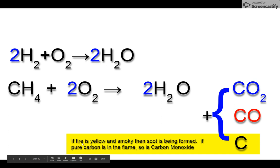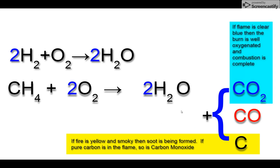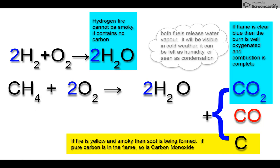Carbon is visible to the eye. It will make the flame yellow and smoky. If the methane is burning clean, you will just get a blue flame and only the production of carbon dioxide. Hydrogen cannot produce a yellow flame because it contains no carbon in the first place. Both fuels will release water vapor. You'll see it in cold weather and you may feel it as humidity or see it as condensation if it's accumulating inside a building, such as running a propane heater in your garage.